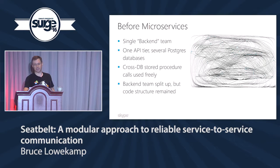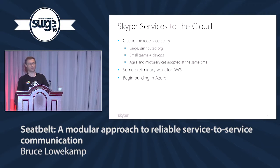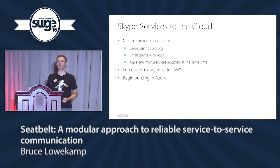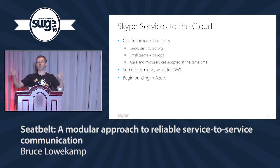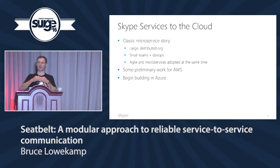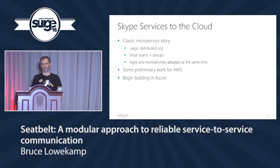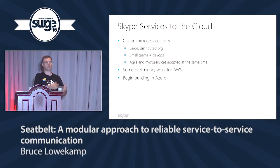We split up the back-end team but the code structure remained, so we had to get beyond that. Moving services to the cloud — the classic story. We have a large distributed org, seven engineering sites around the world, spanning time zones with a nine-hour difference between Estonia and the West Coast. If you work in Europe, your morning is free but your evenings are filled with meetings until six or seven. On the West Coast, you get in at 5:30 or earlier. We have separate teams that we try to keep co-located in each office.